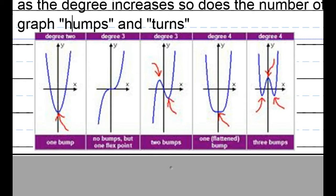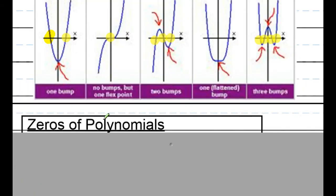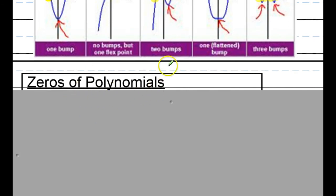What does that mean for us? It means that we're going to have more than one x-intercept when there is more than one bump. Because every time you have a bump, it increases the number of x-intercepts where the graph crosses the x-axis. Looking at the examples: the degree 3 polynomial with two bumps crosses the x-axis three times, and the degree 4 polynomial with three bumps has four x-intercepts. As bumps increase, so do the x-intercepts. This means the zeros of the polynomial increase as the degree increases.